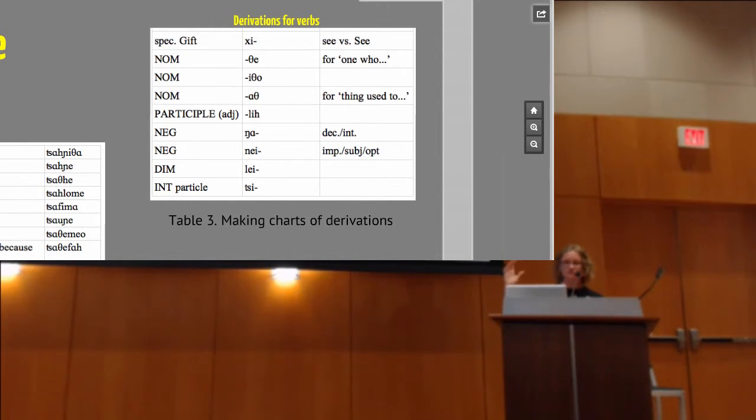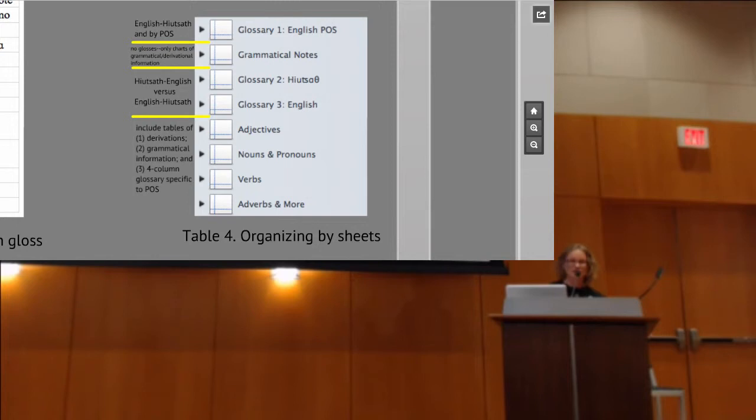And then also I keep several different charts running at all times in Numbers. And I'm sure in Excel you can somehow do this too. I haven't figured out how. But you can keep different sheets. And so I actually keep my information organized in about eight different ways. So that way I can access it however my brain is working that particular day. So my glossary one is by part of speech and alphabetical by English.